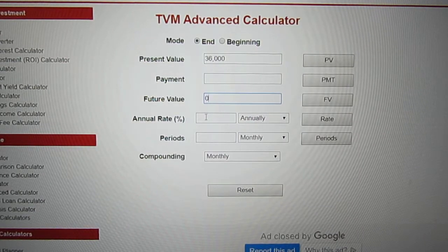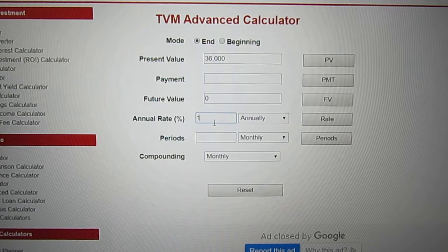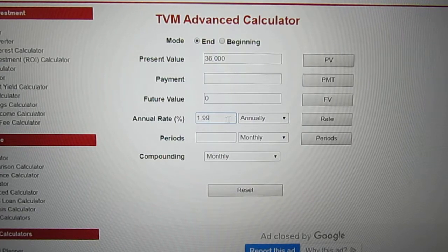How about the interest rate? The problem said the interest was 1.99%. It's an annual interest, that's always annually for us.